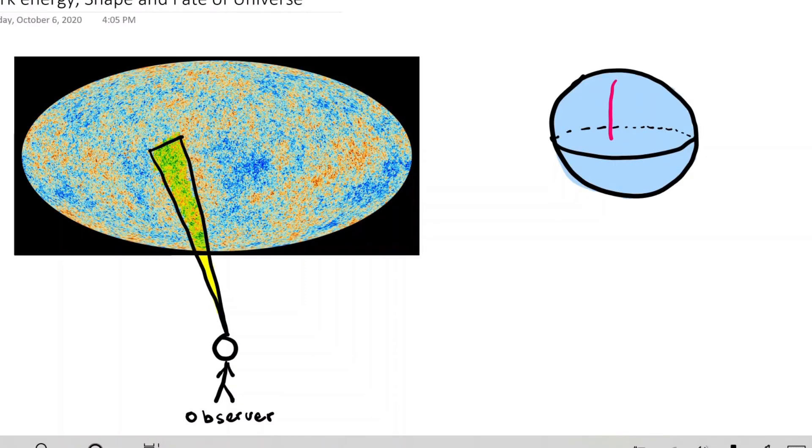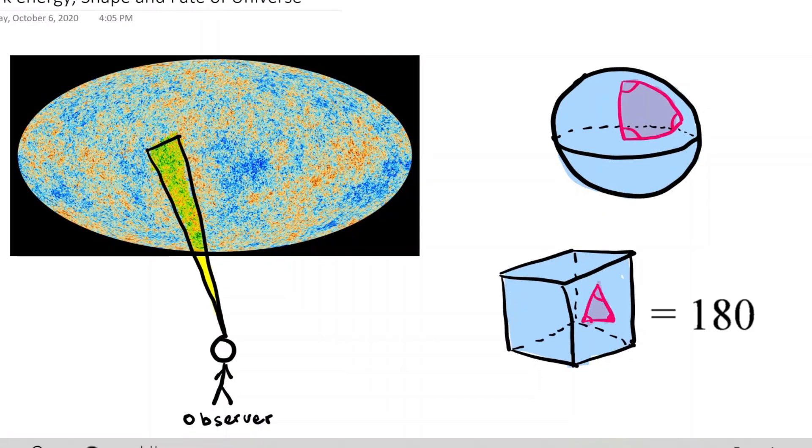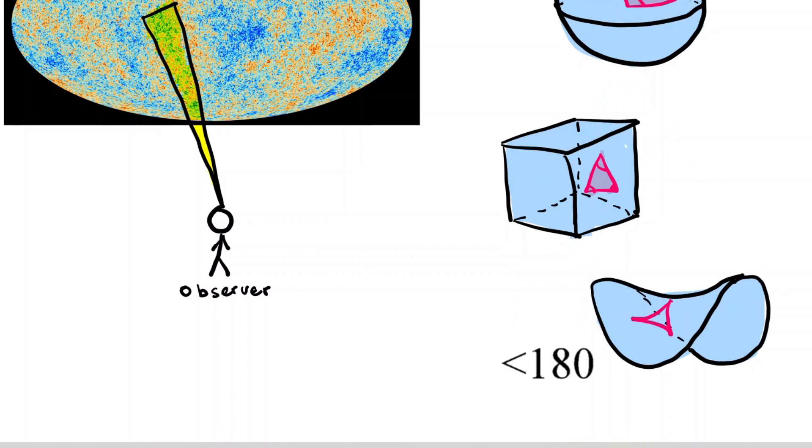If the angles of a triangle add up to more than 180 degrees, the universe is spherical. If the sum is exactly 180, the universe is flat. If the sum is below 180, it's a pringle. Just kidding, it's called hyperbolic.